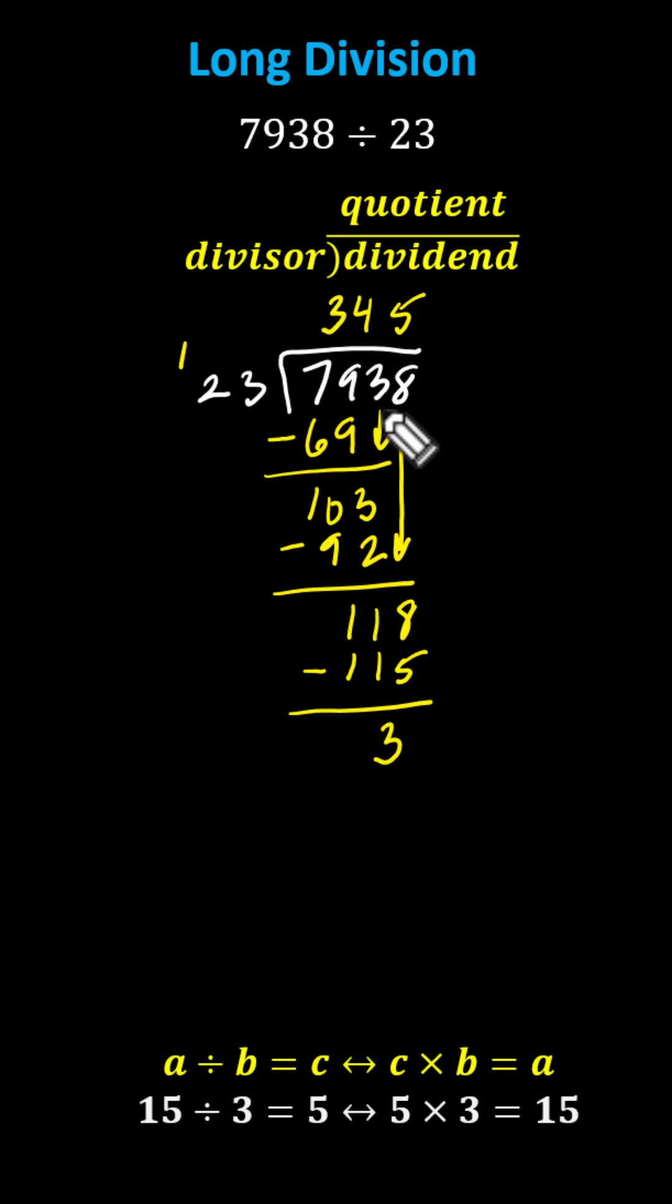Which means 7,938 divided by 23 equals 345 with the remainder of three. We should also make the connection. This also indicates the quotient of 345 times the divisor of 23 plus the remainder of three equals the dividend of 7,938.